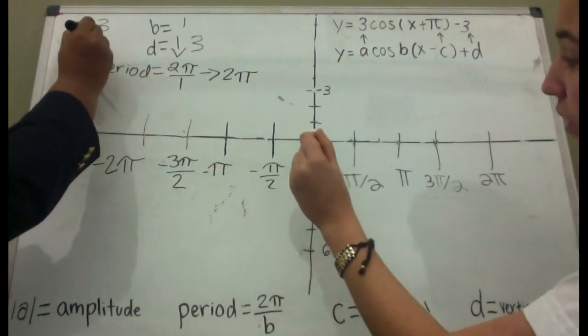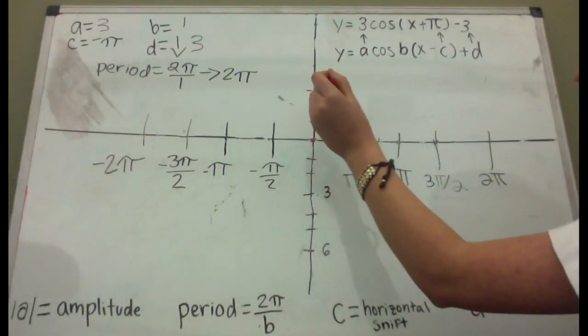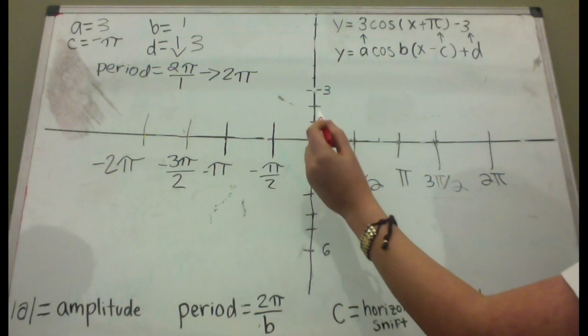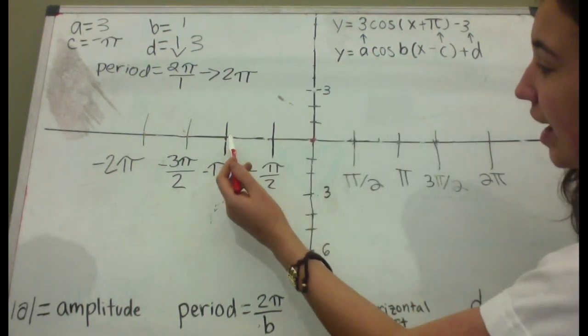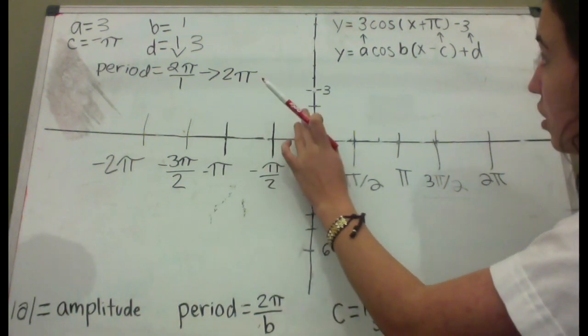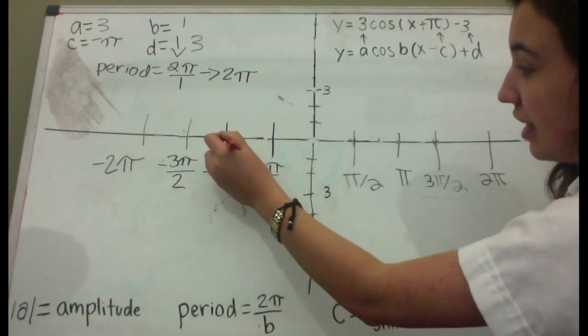And that is where your graph really begins. So remember, we've shifted down 3 from our amplitude for our negative 3 vertical shift downward, and we've also shifted in the negative direction, remember changing that sign, negative π. So actually our graph of 3 cos(x plus π) minus 3 will begin here.